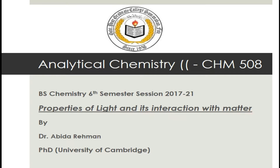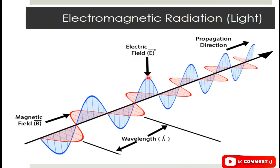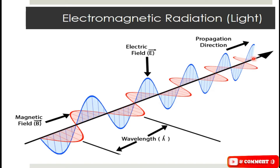Light consists of electromagnetic radiation — it has an electric part and a magnetic part. The electric part of light radiation is represented by a blue wave while the magnetic part is represented by a red wave. These electric and magnetic fields are perpendicular to each other, as you can see in this picture.